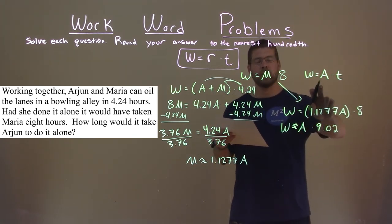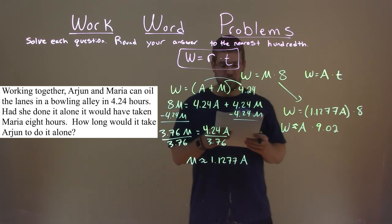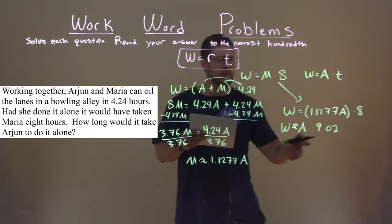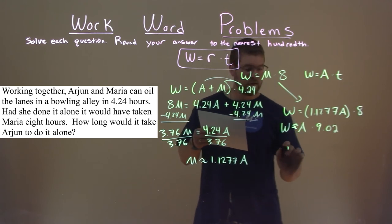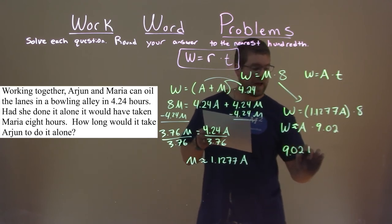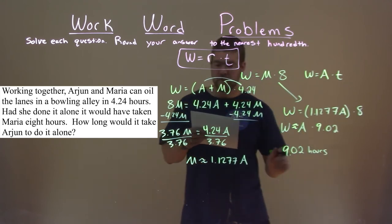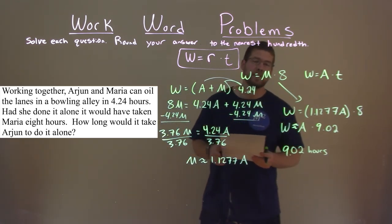And so we can see that now with our formula for Arjun's work rate. The time there is 9.02, so 9.02 hours is how long it would take Arjun to do it alone.